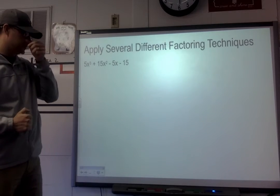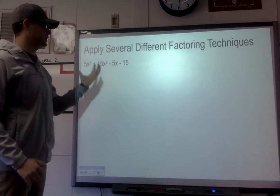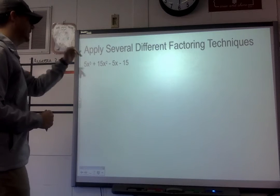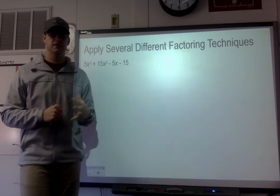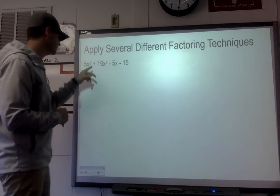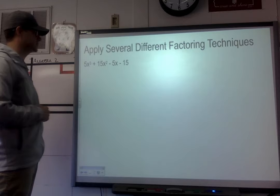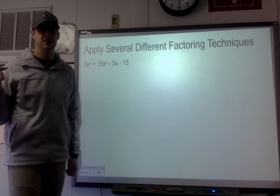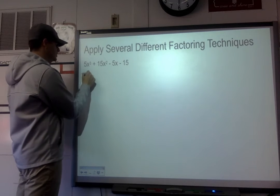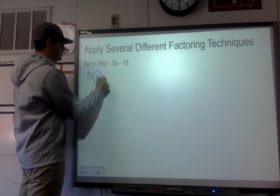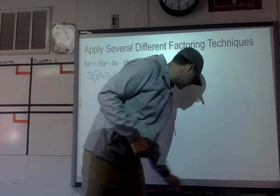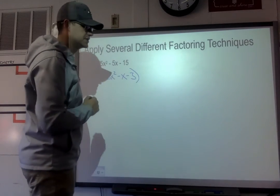Now we're going to apply several different factoring techniques in one problem. We'll use multiple techniques on 5x³ + 15x² - 5x - 15. First, always check for a common factor — 5 goes into all terms, so factor out a 5, leaving 5(x³ + 3x² - x - 3). That's our first type of factoring: taking out a common factor.